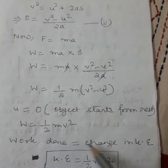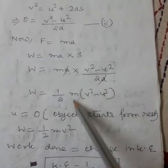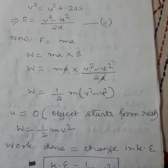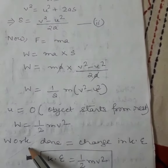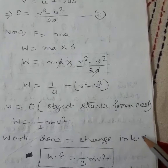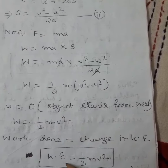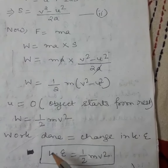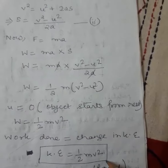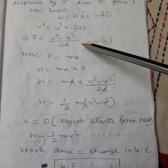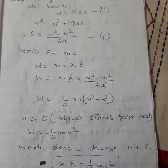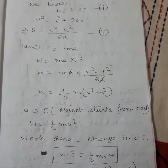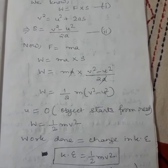We know work done is equal to change in kinetic energy — that is, final kinetic energy minus initial kinetic energy. So W is equal to half m v square, and since work done equals change in kinetic energy, in place of W we can write kinetic energy: KE is equal to half m v square. So using W equals F into s, the third equation of motion, and F equals ma, and substituting all values, we derive the formula for kinetic energy as half m v square.